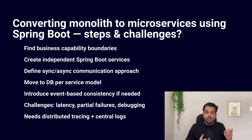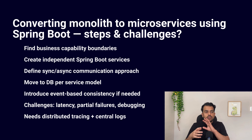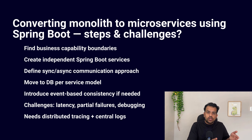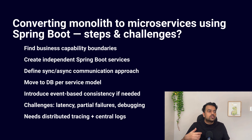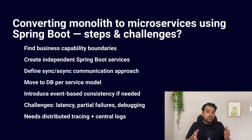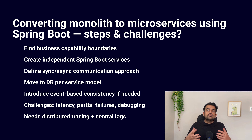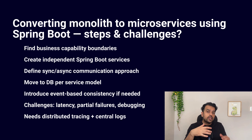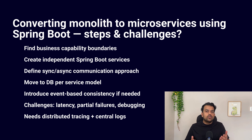After that, think about data. In microservices you move toward a database-per-service model instead of one big shared schema. This means refactoring tables, queries, and using patterns like Saga to maintain data consistency. The first challenge is operational complexity — earlier you deployed only one war file, now you manage many versions. The second challenge is data consistency, since each service has its own database and you cannot use simple local transactions for cross-service flows. The third challenge is networking and debugging — everything is over the network, so you deal with latencies, timeouts, and partial failures, requiring good logging, tracing, and monitoring tools.